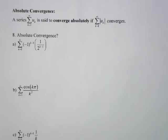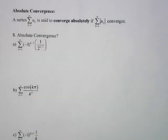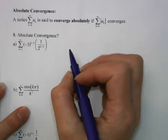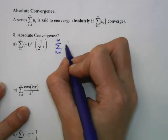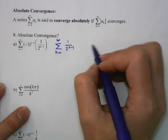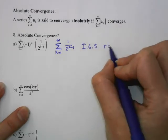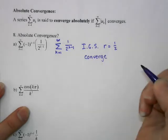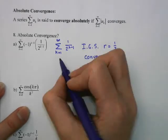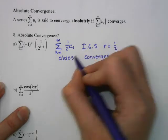Now let's talk about absolute convergence. We've seen that the harmonic series diverges but its alternating series converges — that's called conditional convergence. Absolute convergence happens when both the positive series and the alternating series converge. So we look at whether 1/(2^(k−1)) converges: that's just an infinite geometric series with a common ratio of 1/2, which means it converges. If the positive series converges, the alternating series converges too — so this absolutely converges.